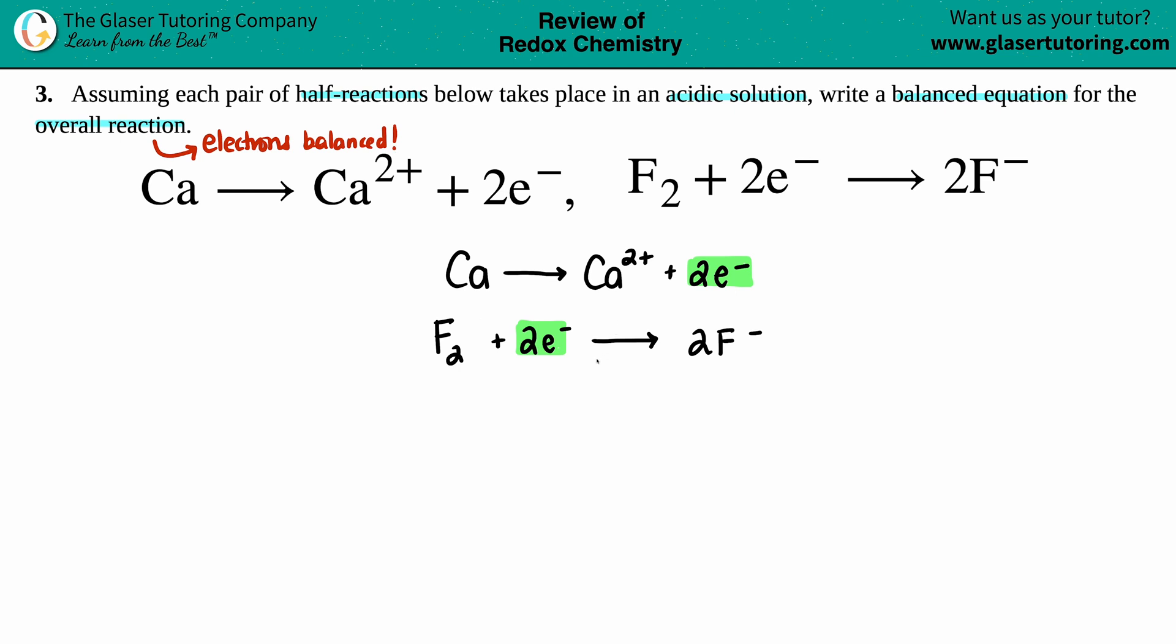And they are, so now I can just put a plus sign and combine these two equations. When I do that, the electrons that are on opposite sides will get canceled out.